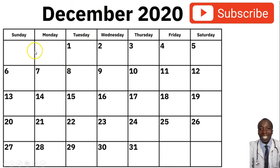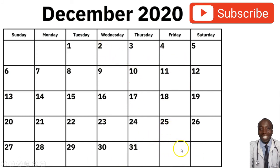Assuming you saw your periods on Tuesday — day one, day two, day three, day four — those are the days of your period. To know your ovulation date, count 14 days from the first day you saw your periods. For a 35-day cycle, the month goes up to 31 days and then you go into the next month by four days — 31 plus 4 equals 35.